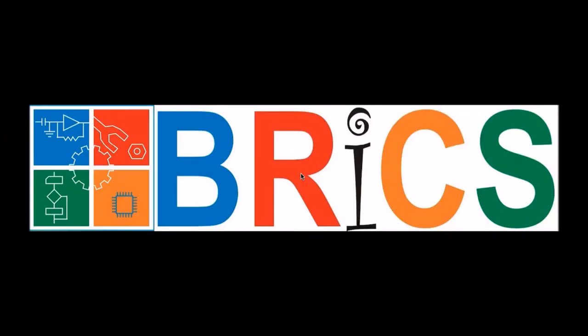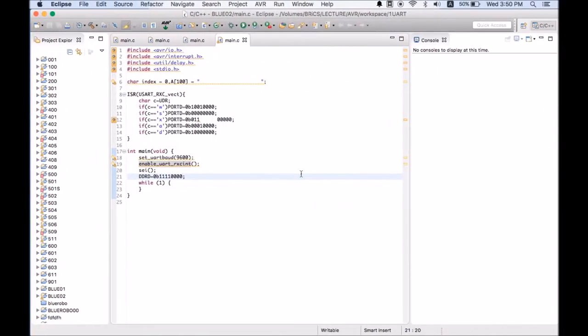Coming to the coding part, we have exactly the same code which we had used for Bluetooth. In main, we have enabled the UART. We have enabled the UART RX interrupt. This is for global interrupt. Next, we have set the DDR to 1111 for D4, D5, D6, and D7. Inside the while loop we have written nothing.